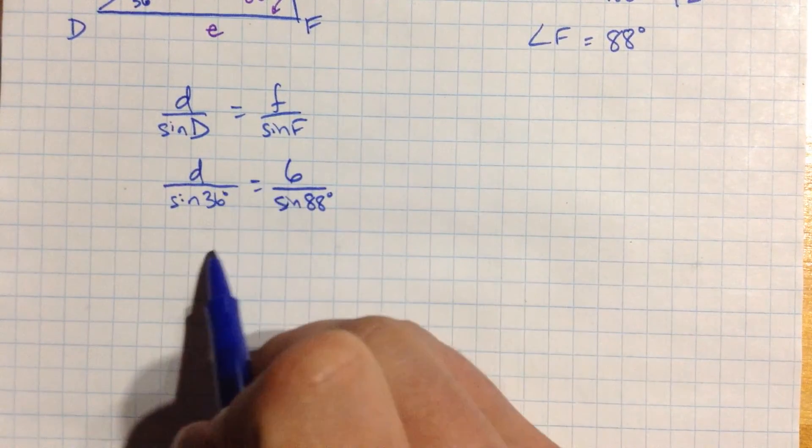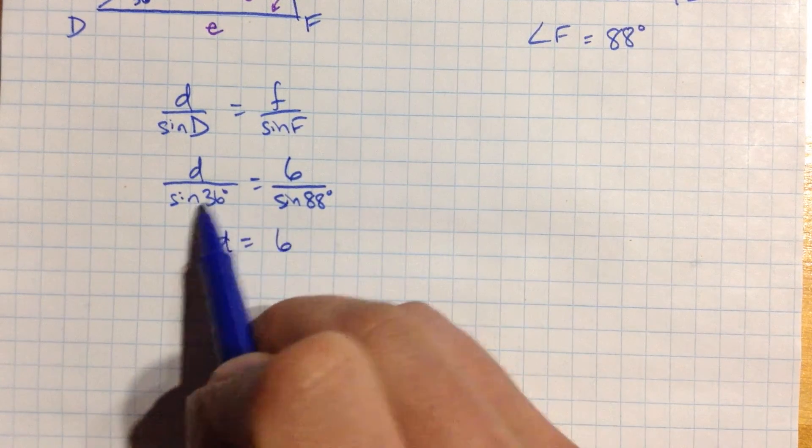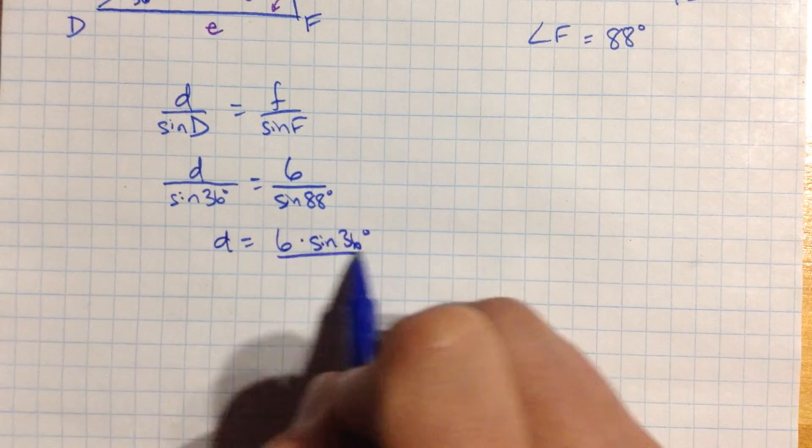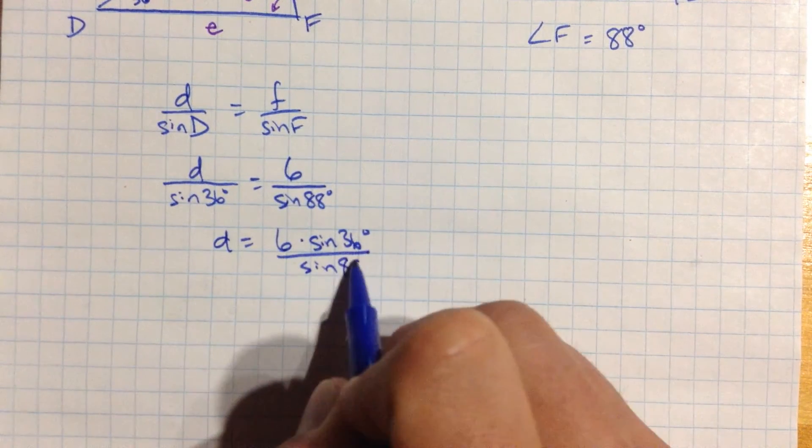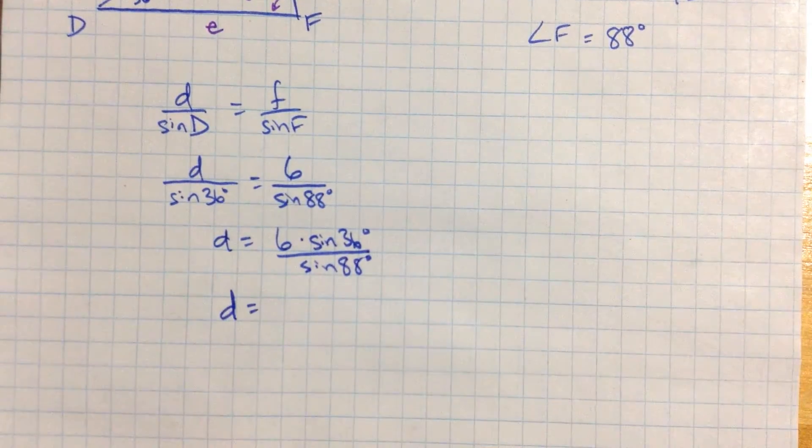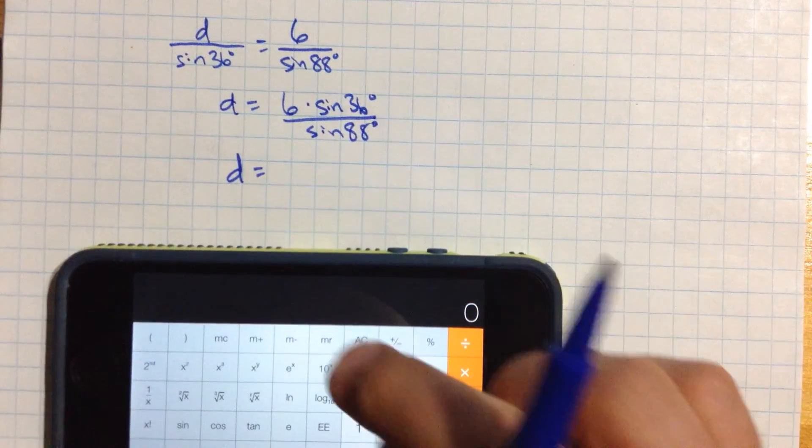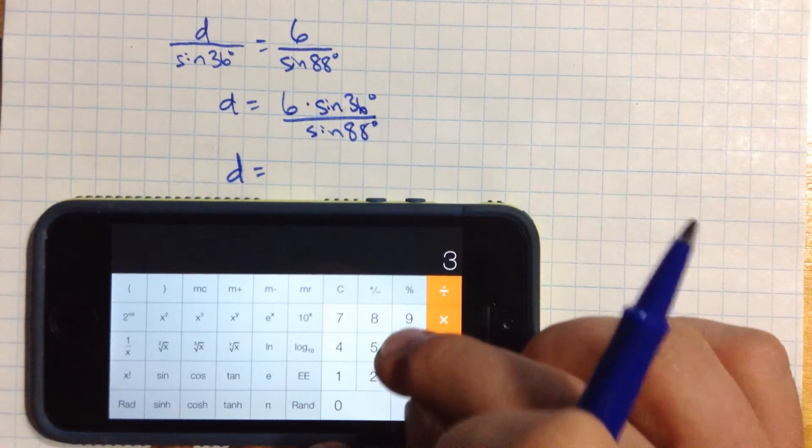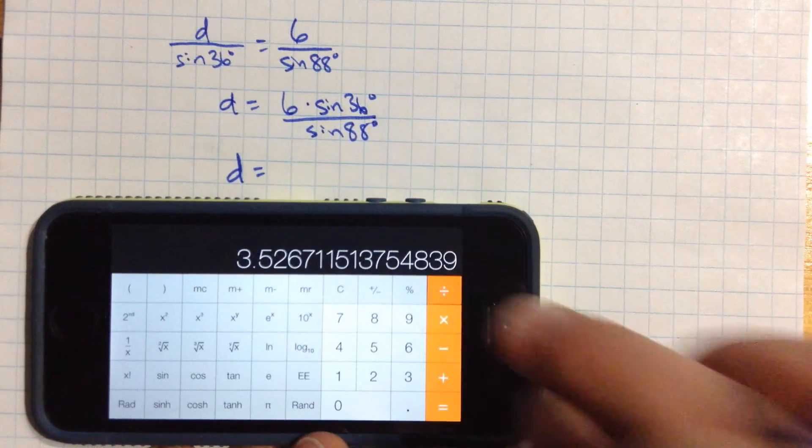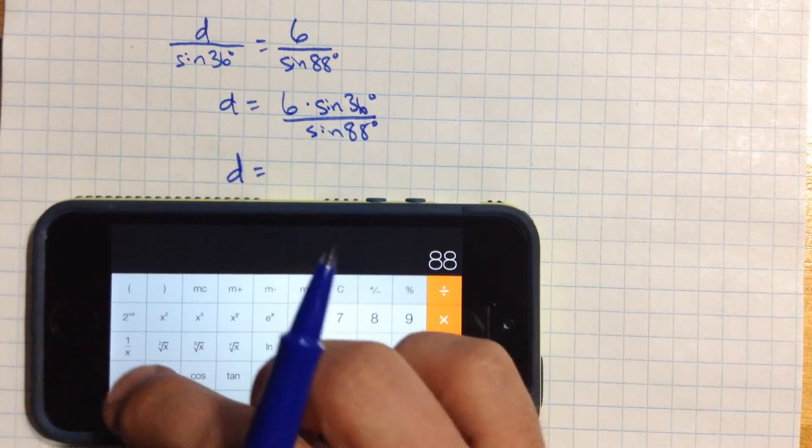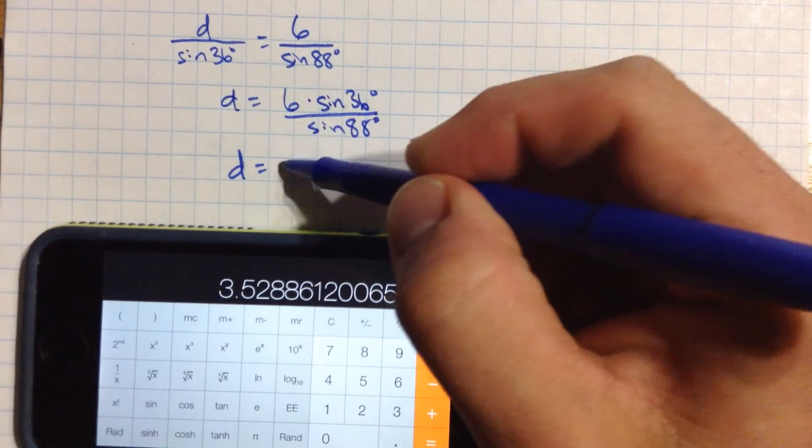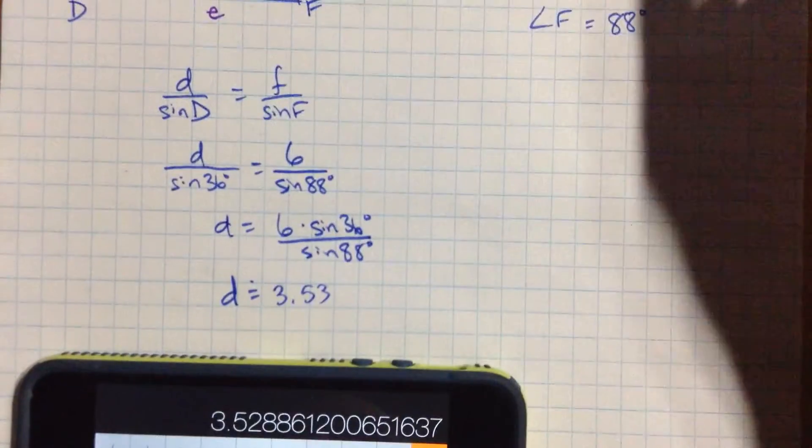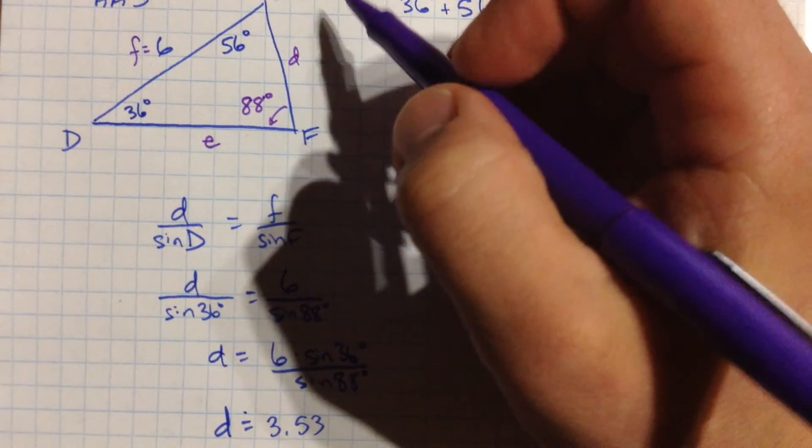We're going to rearrange this. We have d equals 6 times, this is being multiplied by both sides, sine of 36 degrees divided by the sine of 88 degrees. Once again, that is calculator worthy. 6 times sine of 36, 36, sine, divided by 88, sine, equals about 3.53. We'll write that in the diagram here.